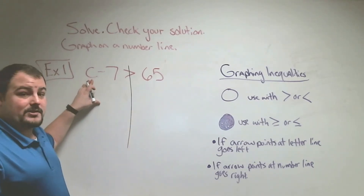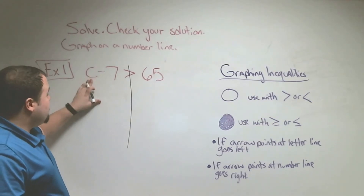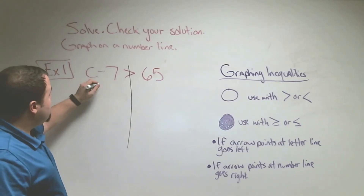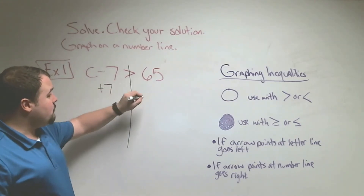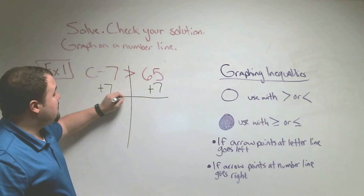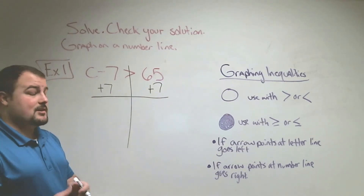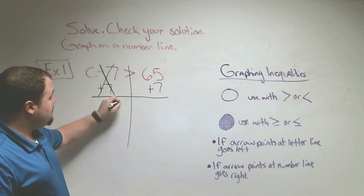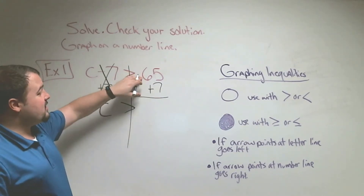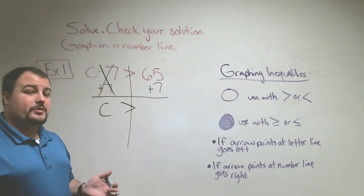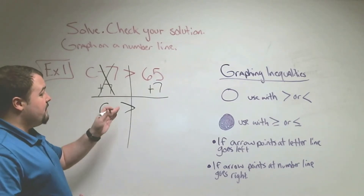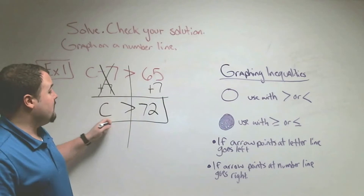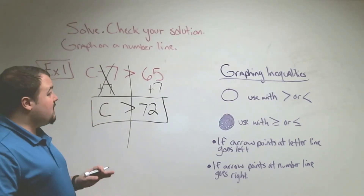We're going to solve for the letter C. To get C alone, we have to get rid of minus 7. The opposite of minus 7 is plus 7, so we add 7 to one side and add 7 to the other side. The 7s cancel out, and C is greater than 65 plus 7, which is 72. Our answer is C is greater than 72.